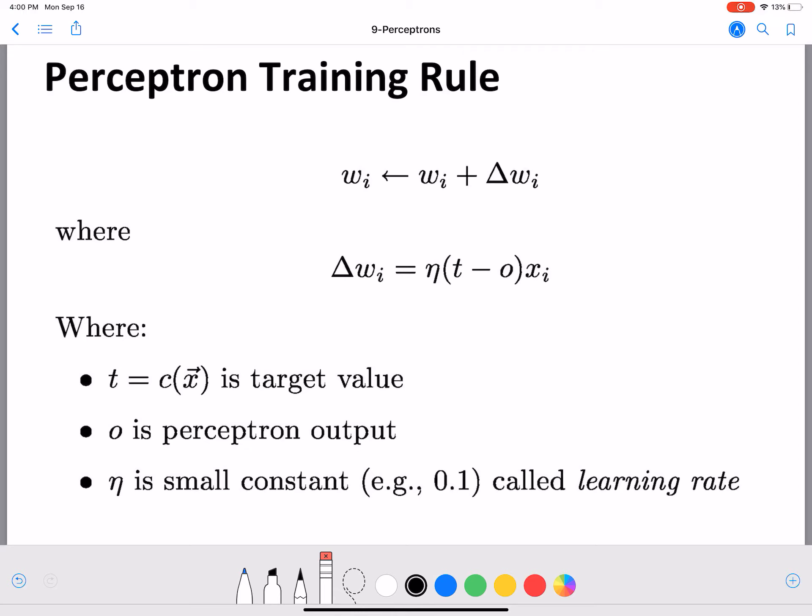The perceptron training rule is a very simple rule which updates the weights. As you can see in the first equation, w_i is the initial value of the weight, and Δw_i is the weight update that is added to the initial value to get your updated weight.